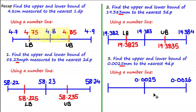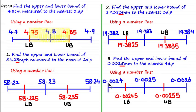Adding 1 gives us the next term up: 0.0026, and subtracting 1 gives us the next term down: 0.0024. Calculating the midpoints between consecutive terms gives us a lower bound of 0.00245 and an upper bound of 0.00255. Let's do some more examples.